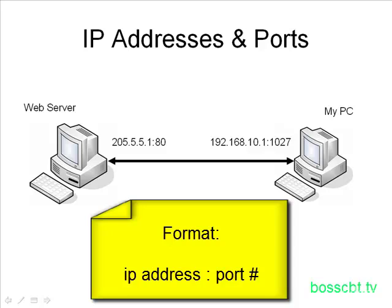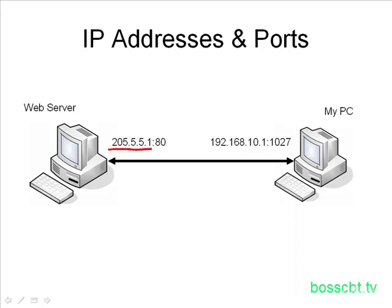In this scenario, my PC is contacting the web server, which has an IP address of 205.5.5.1. The web server program is listening on port 80. So when my PC contacts it, not only does it say which IP address it's going to, but it states which port it's going to. When the web server receives my packets, it knows exactly what service I'm interested in, because this web server can be doing many other things — there are many different ports reserved for common services.